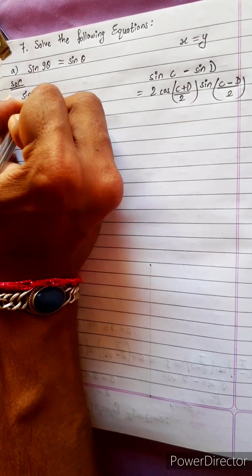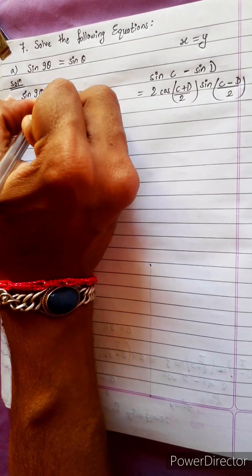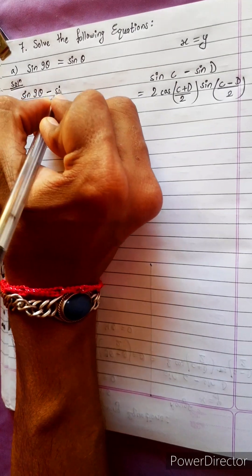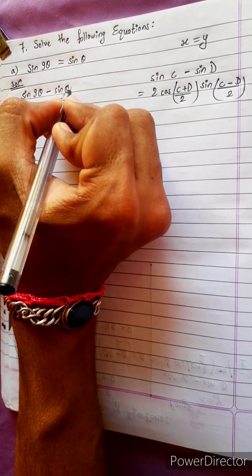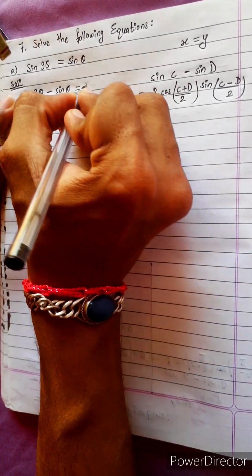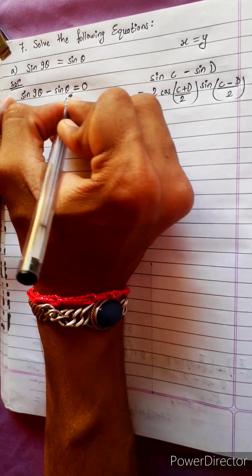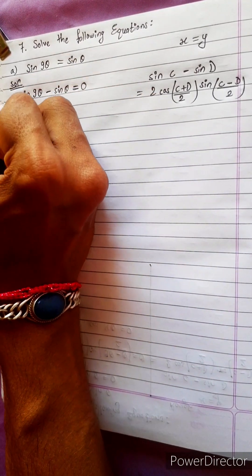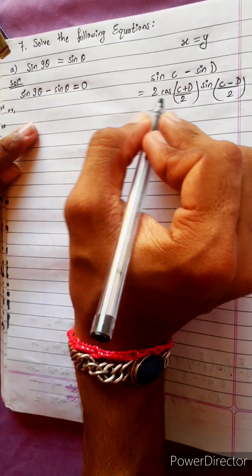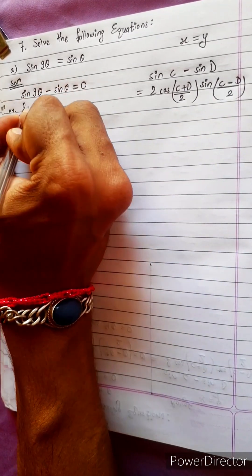sin 9θ minus sin θ equals 0. Now the formula is applicable.